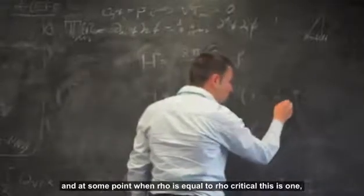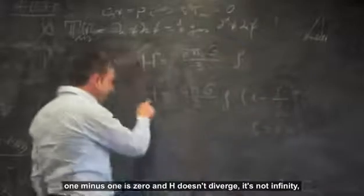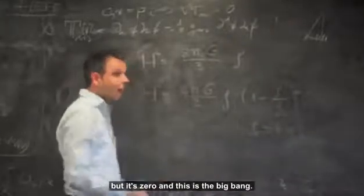At some point when rho equals rho critical, this is one, one minus one is zero, and h doesn't diverge. It's not infinity, but it's zero. And this is the big bounce.